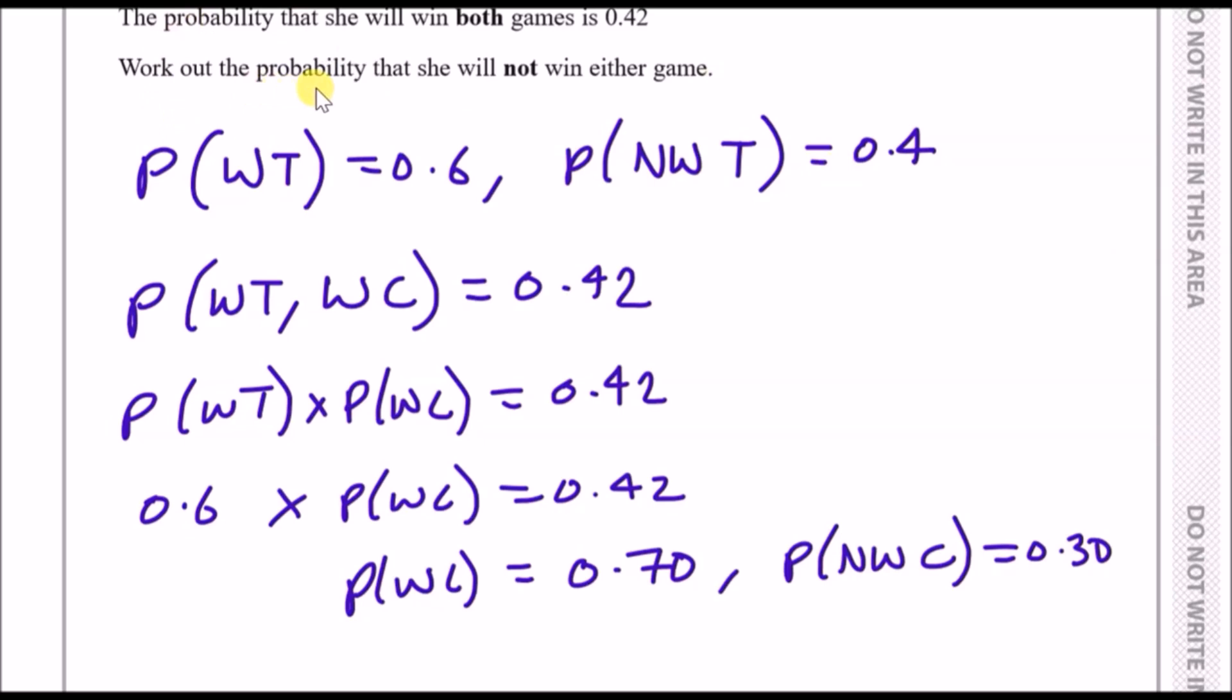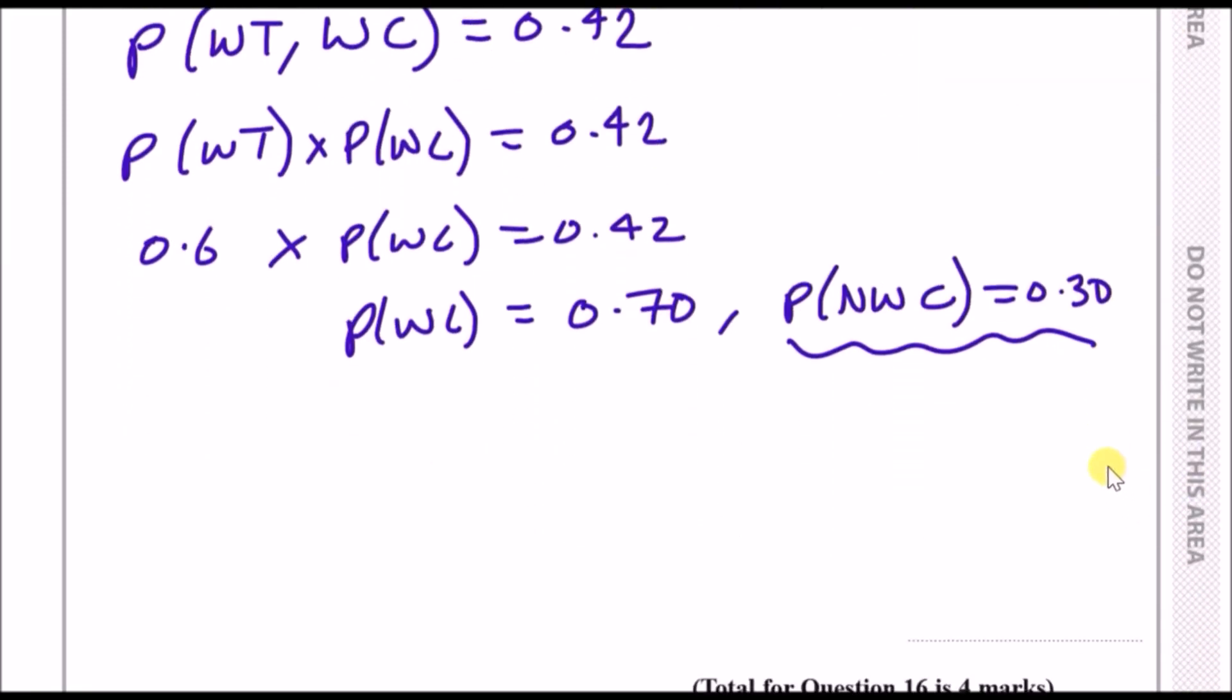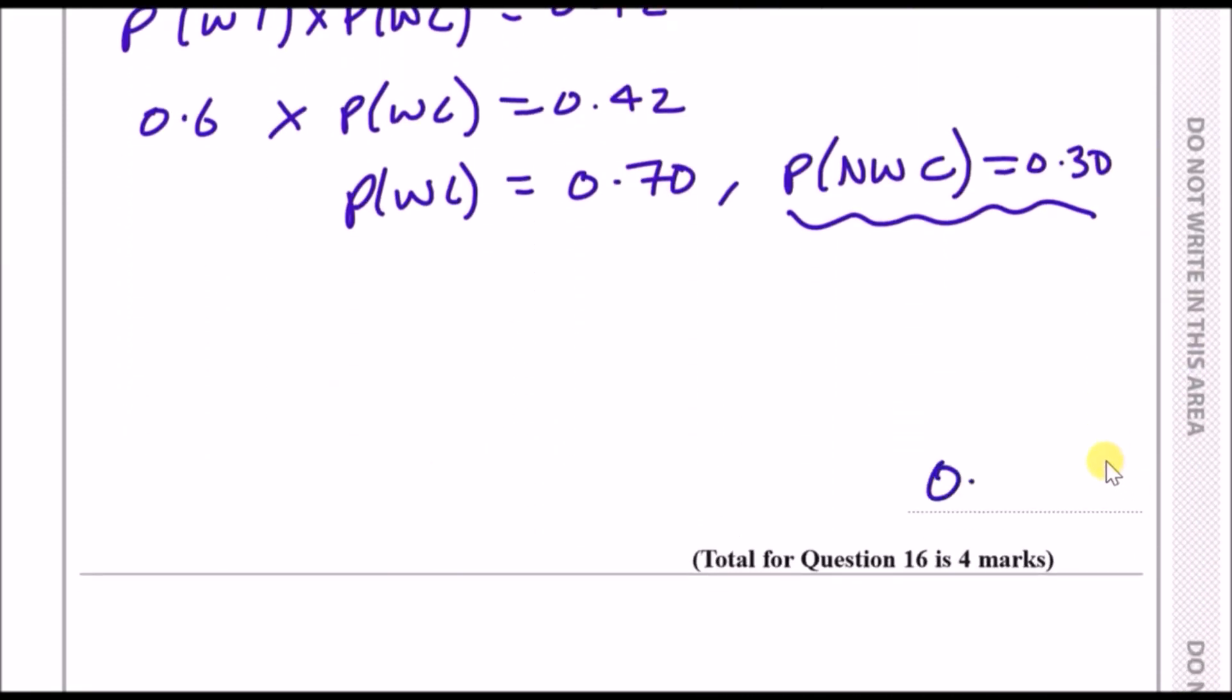Now the question wants us to work out the probability that she will not win either game. We have all the probabilities. The probability that she will not win tennis is 0.4, and the probability that she will not win chess is 0.3. So if we times 0.4 with 0.3, the answer should be 0.12. And we're done.